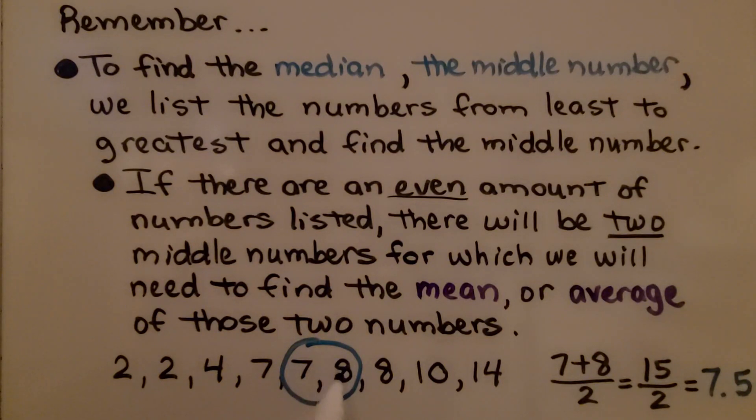So 7 plus 8 is 15, and we use two numbers, so we divide it by 2. That's going to give us a median of 7.5.